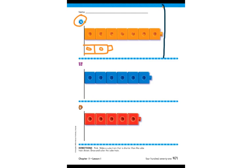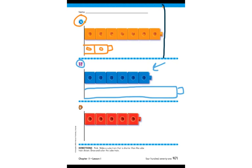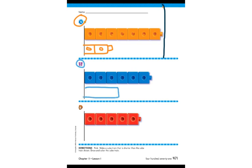Moving on to number five, we have a blue cube train. I'm just going to draw a shorter cube train. If I drew the line all the way out here — is this shorter than the top one? It's not; it's longer because it goes out farther. So we need to erase that and try again. I'm going to draw a cube train of one, two, and three cubes. Is this cube train shorter now? Yes, it is shorter than the top one.